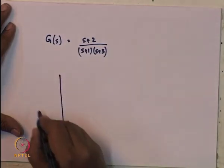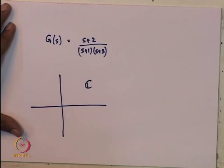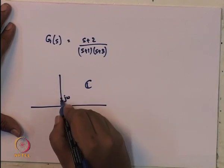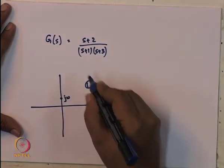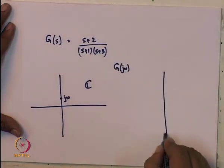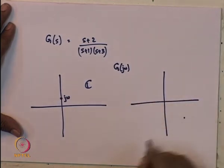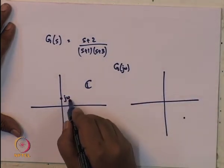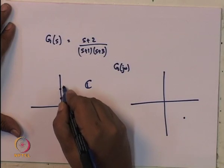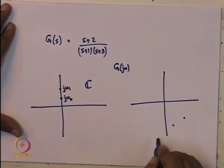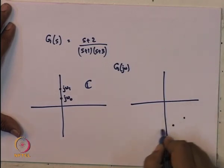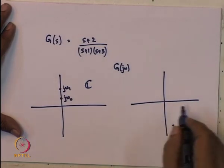One looks at the complex plane and then for any imaginary value, we calculate what G is and this gives us a point. Evaluating this at some value gives us one point, we evaluate it at some other value and get another point, and so on. As a result you get a whole set of these points and when you join all of these together, you get the Nyquist plot.